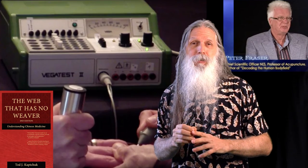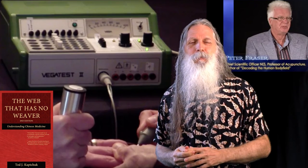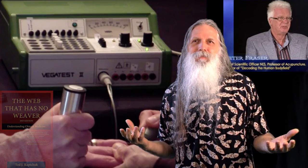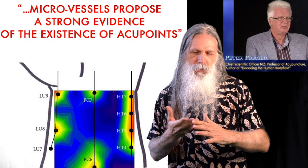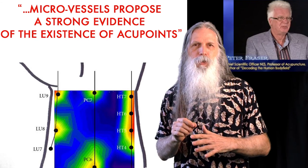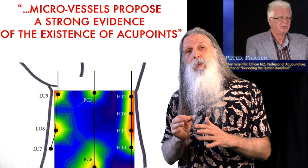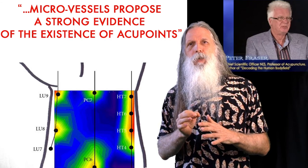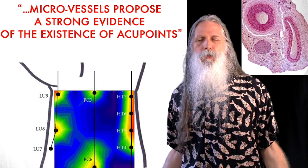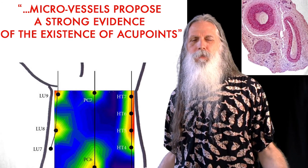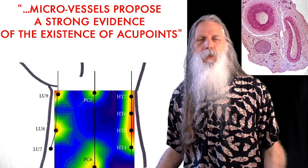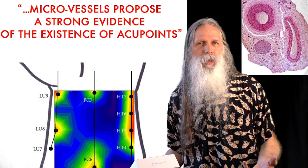For example, acupuncture points. For a long time, Western science just assumed that these didn't really exist. They looked and said, I don't see a point there. But now we can measure electronically, we can measure many different ways. And the acupuncture points, we now know the anatomy, the microstructure of an acupuncture point is where there's a neurovascular bundle. So for many years, Western science kind of assumed that oriental medicine was just not really grounded in anything that we could measure or see.